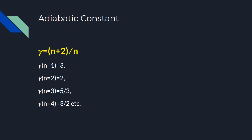When the degree of freedom is 1, we get gamma equal to 3. Similarly, for n=2, we get gamma equal to 2 by substituting in the equation. For n=3, it will be 5/3, and n=4 will be 3/2, and so on. As a general trend, we can see that gamma decreases as the degree of freedom increases.